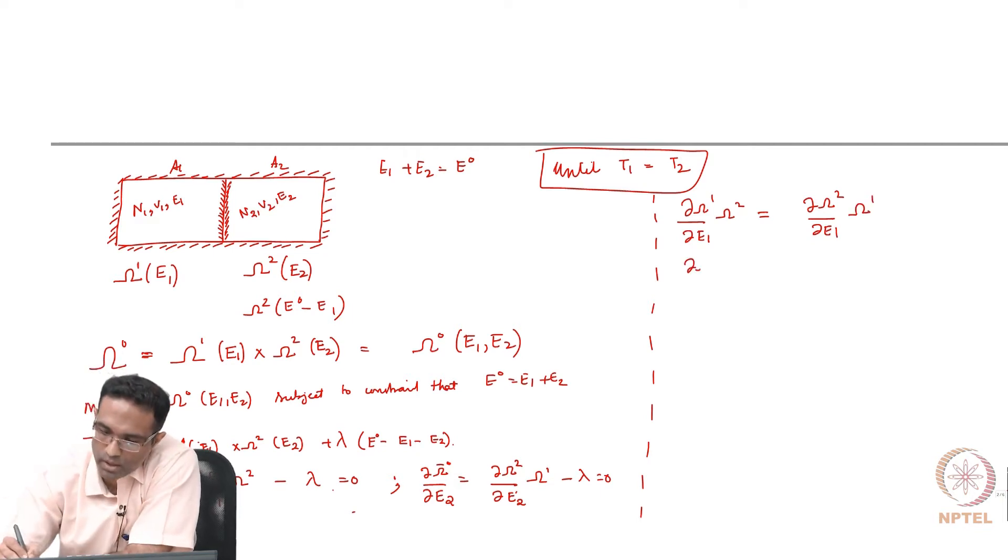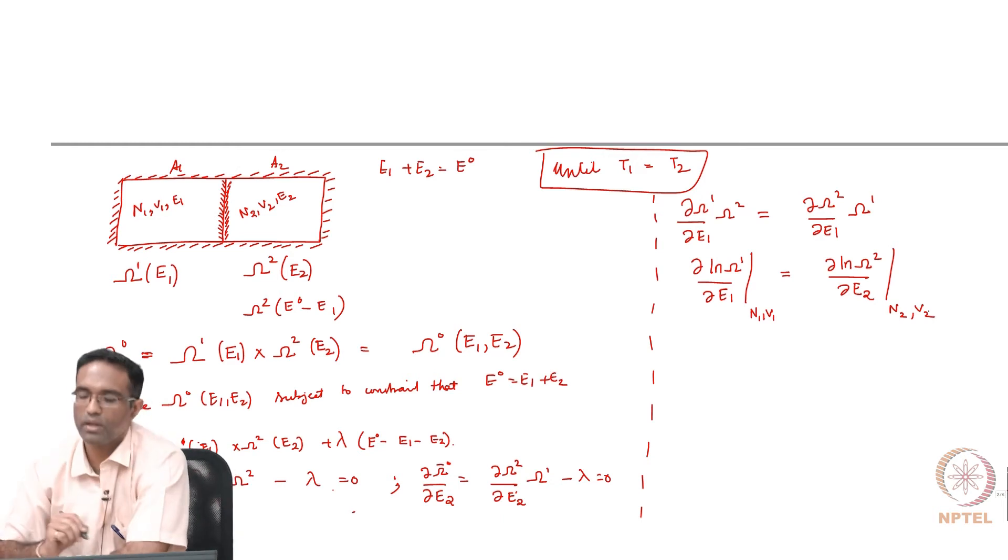If you do a little bit of algebra, this turns out to be dou ln omega 1 by dou E1 is equal to dou ln omega 2 by dou E2. And during this process, remember, we have kept the number of species and the volume in each thing a constant.